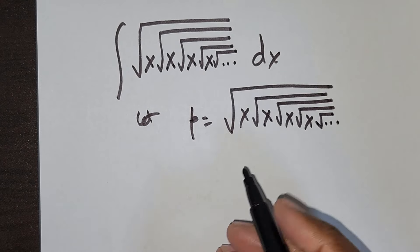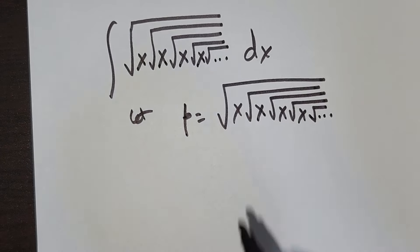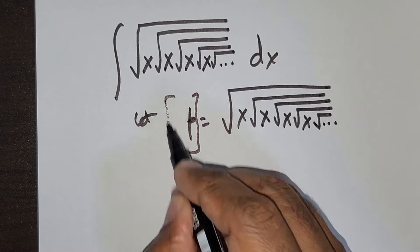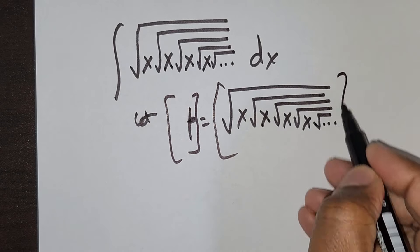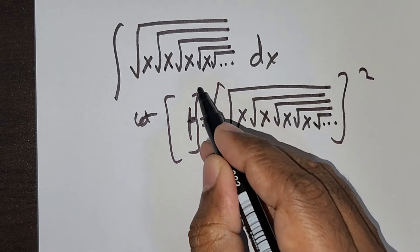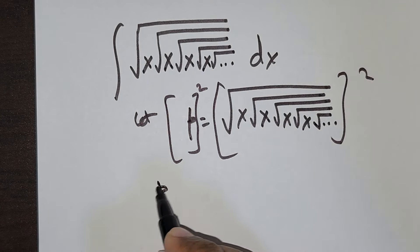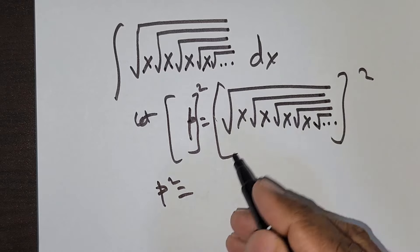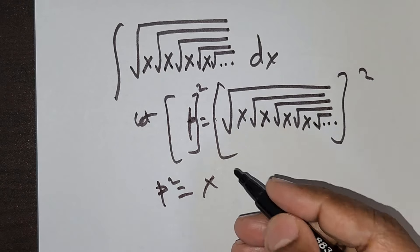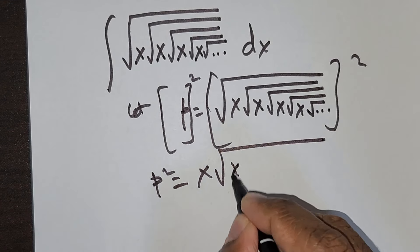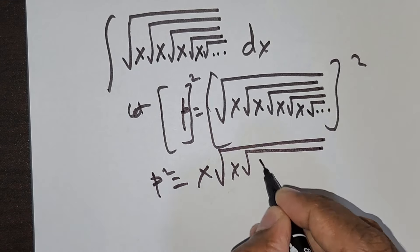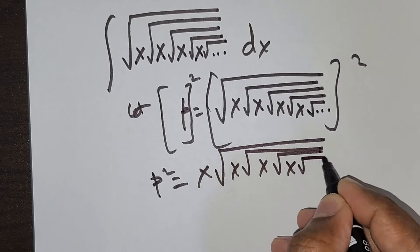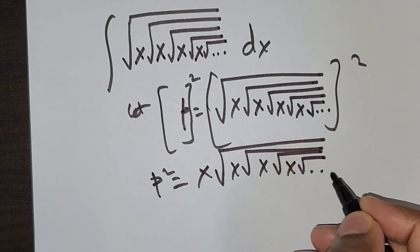Now, if I were to square both sides — I'm going to square both sides — this would give me P squared. The first radical sign would be removed, giving me x times root of x times root of x times root of x, and so on.